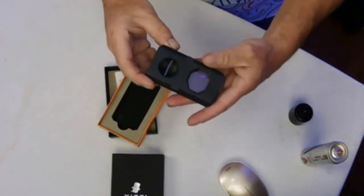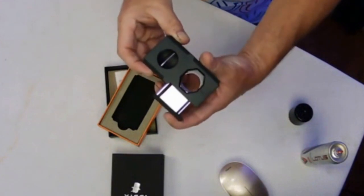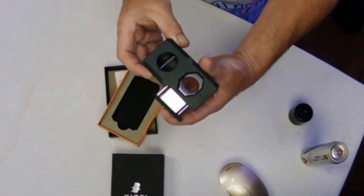This one here is a push button. You push that and the cutter will come out to cut the whole end off the cigar.